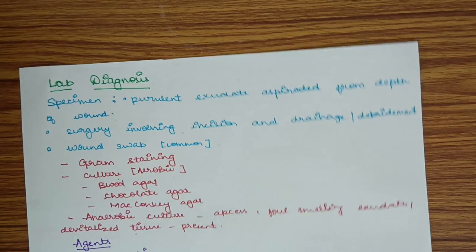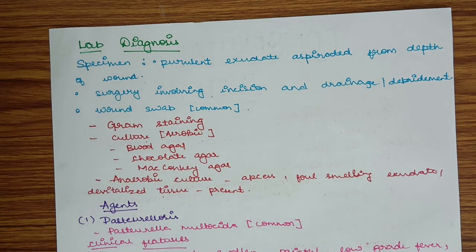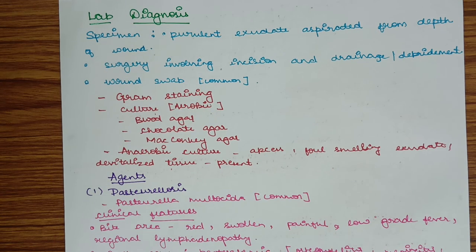Lab diagnosis: specimen of choice is purulent exudate aspirated from depth of wound or surgery incision from drainage or debridement. Wound swab is the most common specimen. It is subjected to gram staining, culture, and anaerobic culture if anaerobic organism is indicated. At least three cultures must be done including blood agar, chocolate agar, and MacConkey agar. Anaerobic culture must be done if anaerobic organism is indicated, such as in case of abscess, foul smelling exudate, or devitalized tissue.